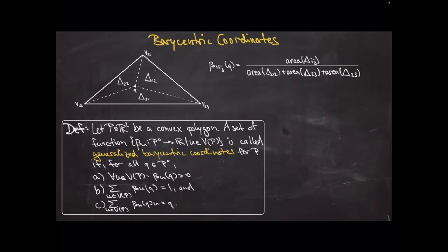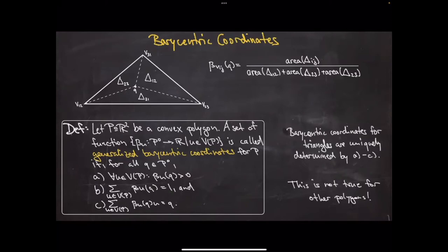Here is the definition for polygons. A set of functions is called barycentric coordinates if: (a) they are strictly positive everywhere on the interior, (b) they sum to one, and (c) every interior point can be expressed as a weighted sum over the vertices with these functions as coefficients. These three axioms uniquely determine barycentric coordinates on triangles, but not on other polygons — for arbitrary polygons there are many sets of functions satisfying the definition.